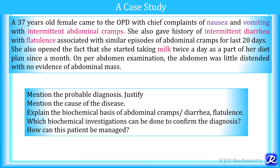The questions which can be asked on this case study are: mention the probable diagnosis and give justification for the same. What is the cause of this disease and explain the biochemical basis of abdominal cramps, diarrhea, and flatulence? Which biochemical investigations can be done to confirm the diagnosis? How can this patient be managed? Now let's find out the answers to all these questions.